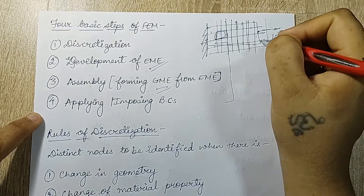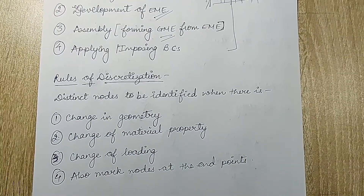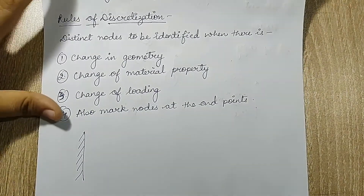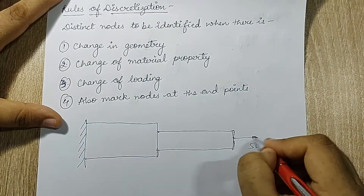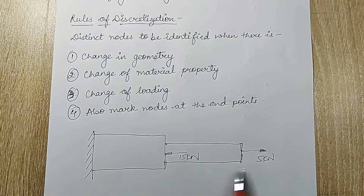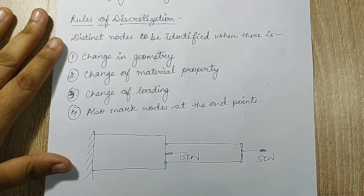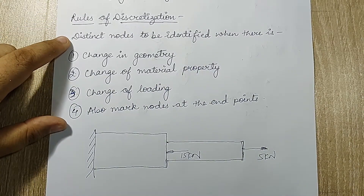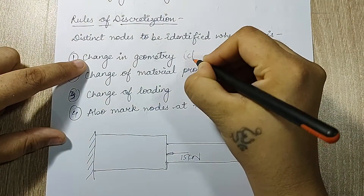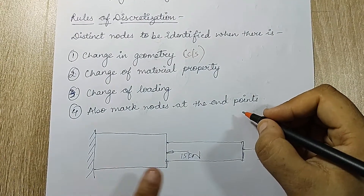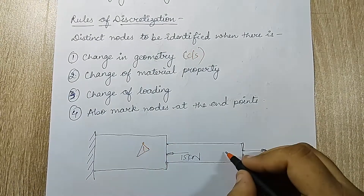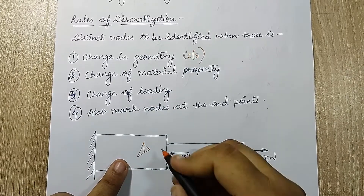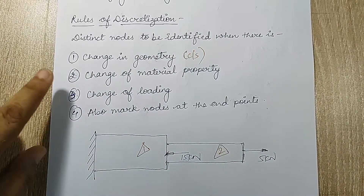We'll now discuss the rules of discretization for a step bar. For example, if a step bar has a load of 5 kN at one point and 15 kN at the other end, we need to demarcate elements and nodes carefully. The first rule: mark distinct nodes where there is a change in geometry, such as a change in cross-section. You should mark a node at that junction point.